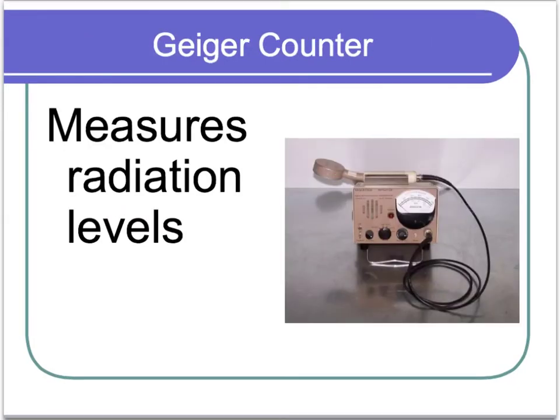This is what a Geiger counter looks like. There's a lot of different types, but basically it measures levels of radiation.